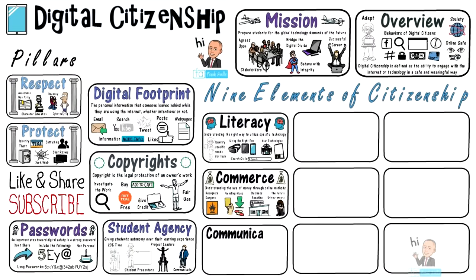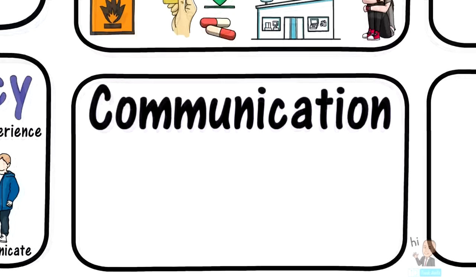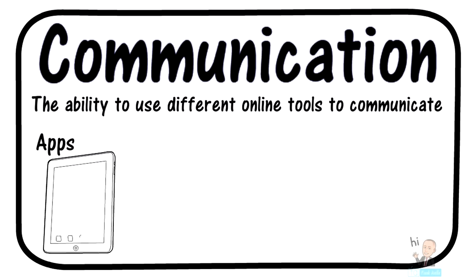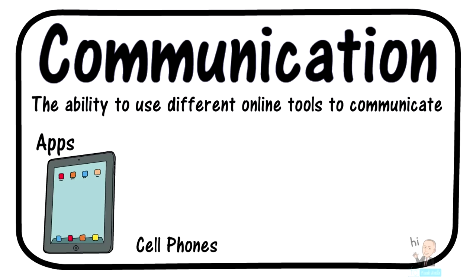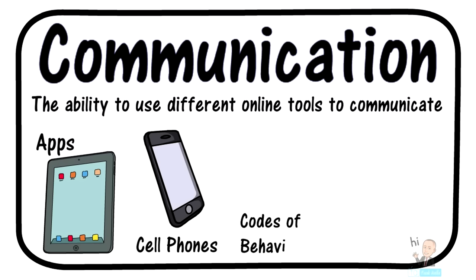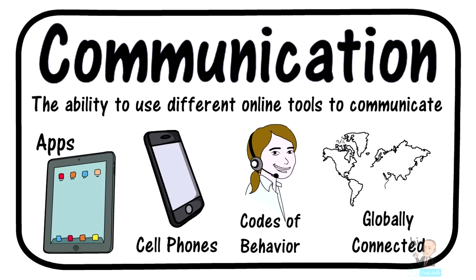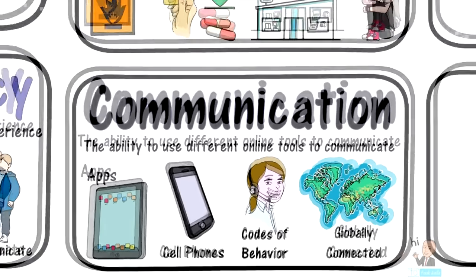The third element is digital communication, defined as the ability to use different online tools to communicate. There are a number of communication apps designed to make it easier for members of a team to communicate. The cell phone is the most important tool for communication — it can make calls, videos, chats, texts, downloads, almost everything. The digital citizen communicates with others in the online world while adhering to a code of conduct and behavior. Digital online communication is so necessary today because a person now has the ability to instantly talk with someone from around the globe.